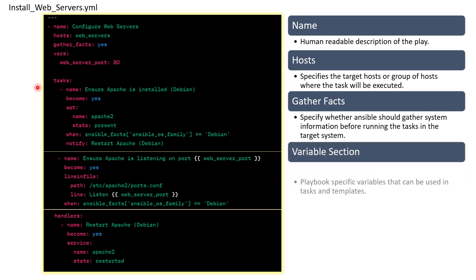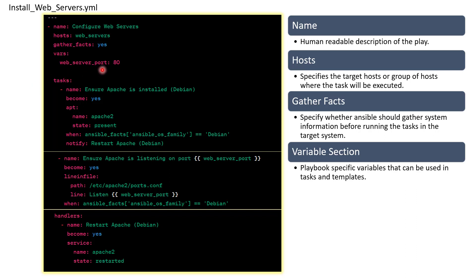In the variables section, instead of typing port 80 under all of your tasks, you just create a variable and use that variable name in the task. For example, 'web_server_port' is used in the task. In the future, if you want to change the port from 80 to any other port, you just change the value here and re-run the playbook.